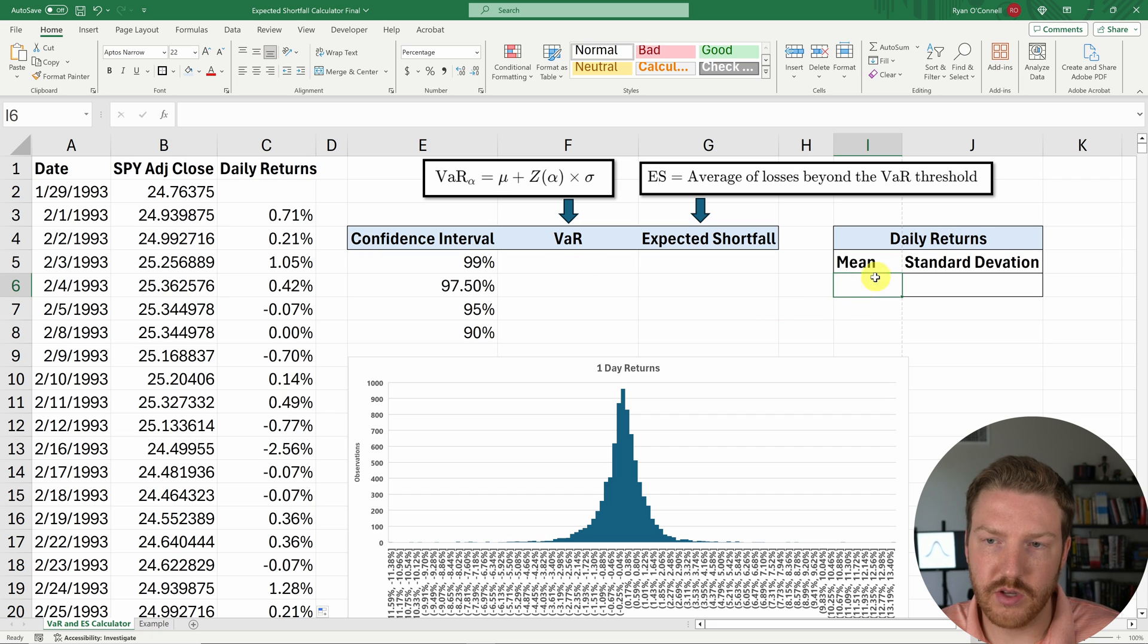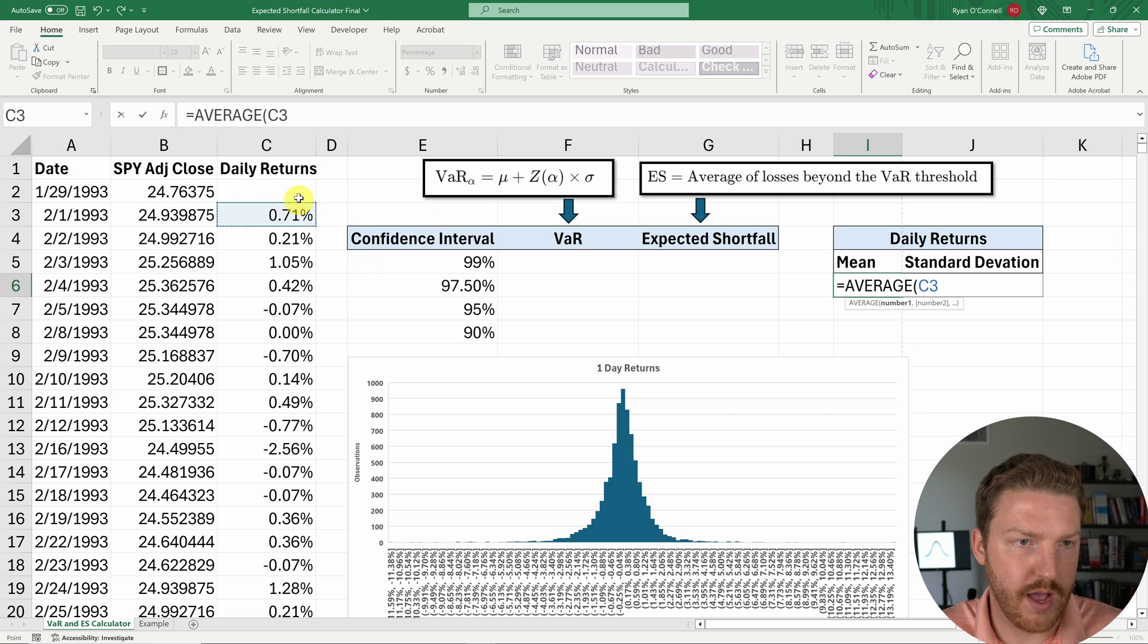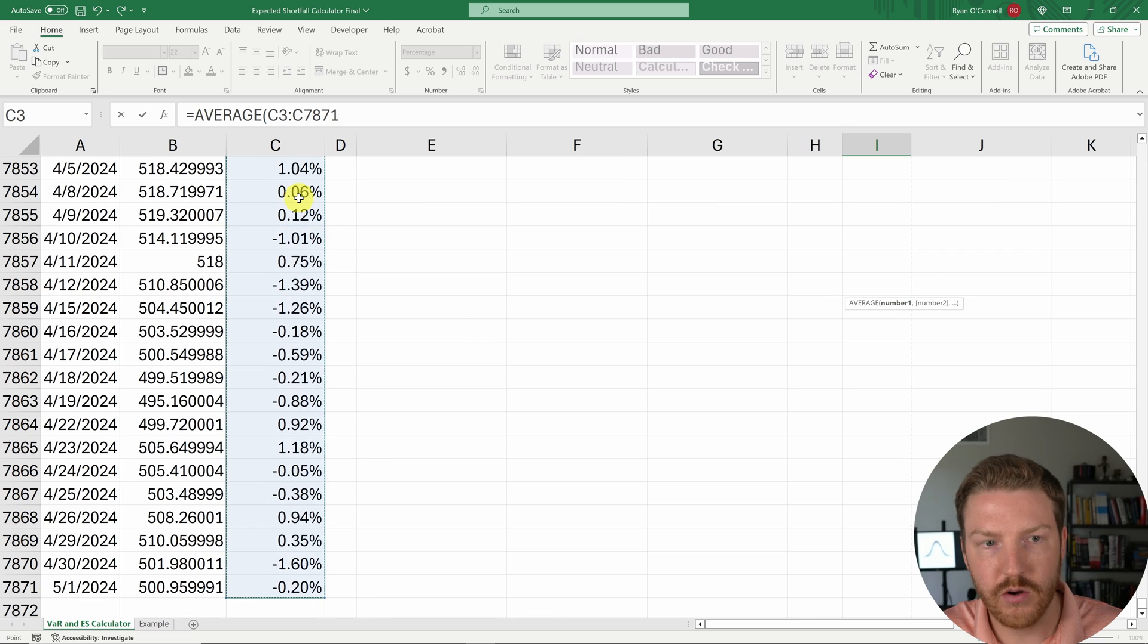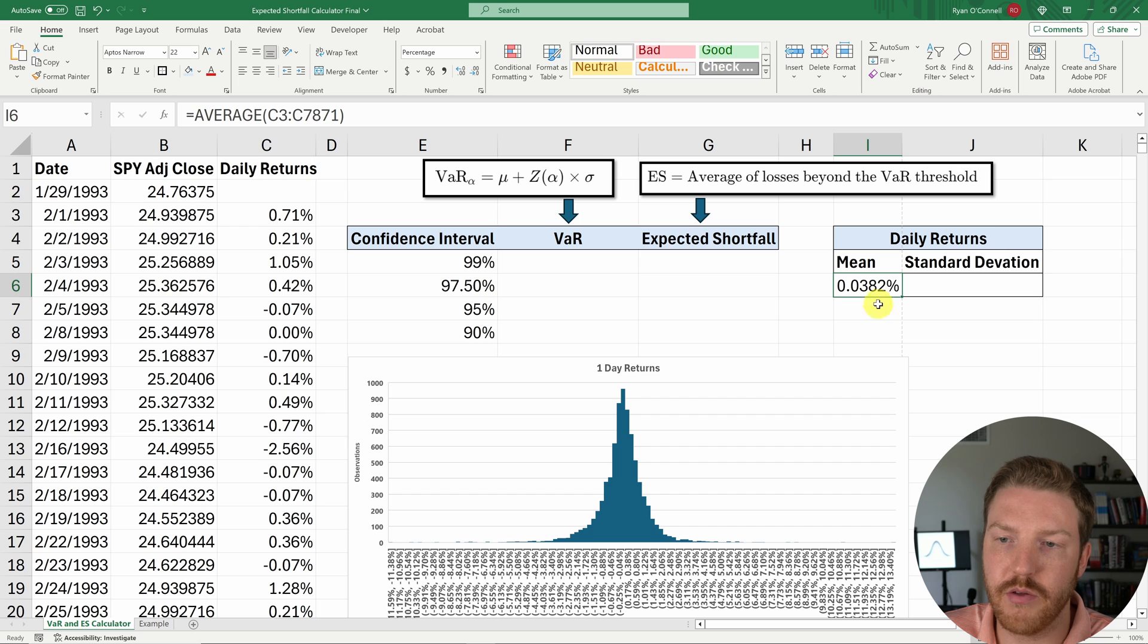So let's look at the mean for the daily returns first, which is going to be equal to the average. And we'll just grab here, control shift down arrow, enter. So the average daily return for basically the last 30 years or so was 0.0382%.